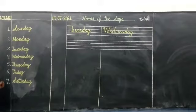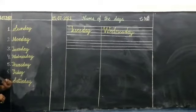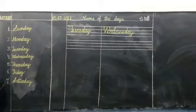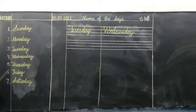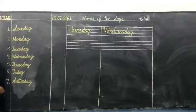Thursday, number 5th: T-H-U-R-S-D-A-Y, Thursday. The 6th number is Friday. And the last day of the week, Saturday. What is the spell of Saturday? S-A-T-U-R-D-A-Y, Saturday.